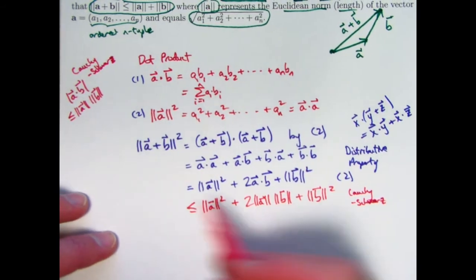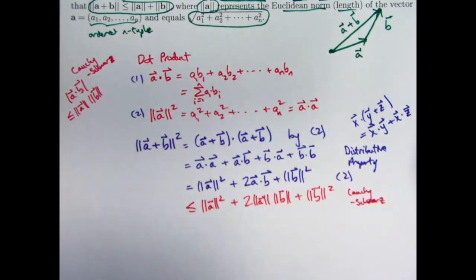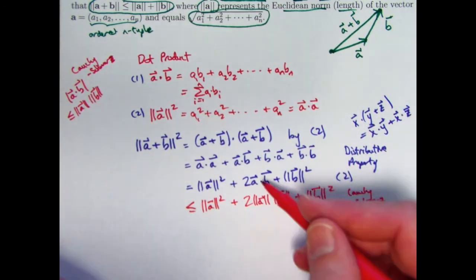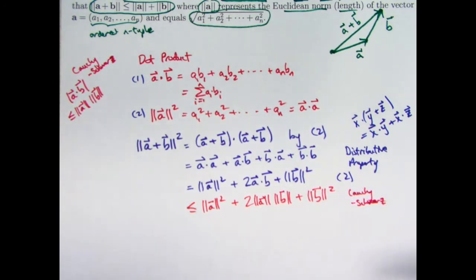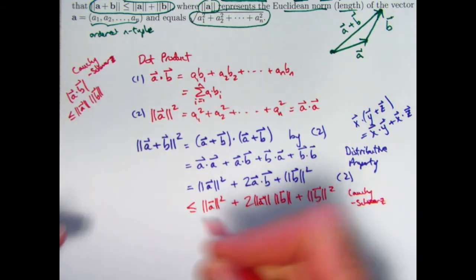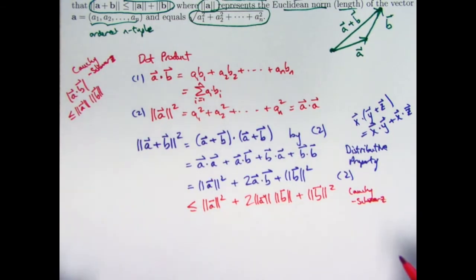I'm trying to avoid trigonometry here because this is the foundations of a real analysis course, and we haven't done any trig yet. So the Cauchy-Schwartz inequality is the way to go if you want to avoid trigonometry.